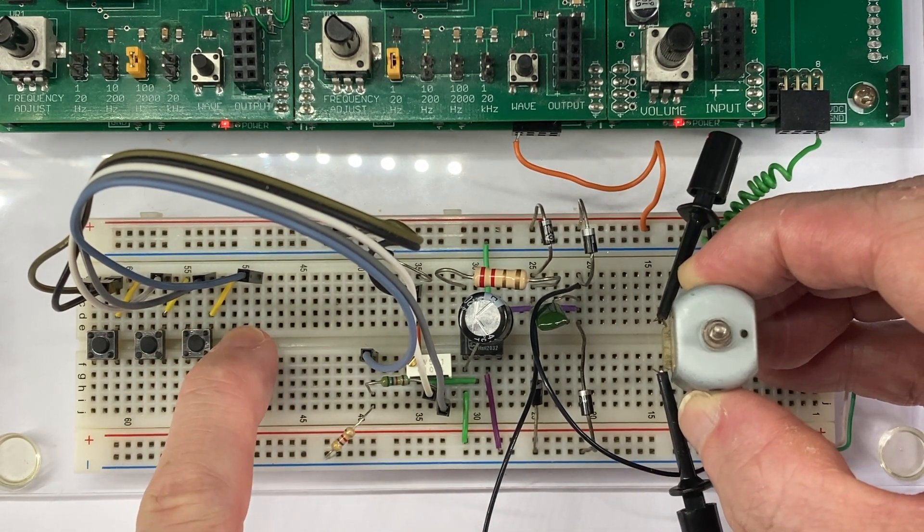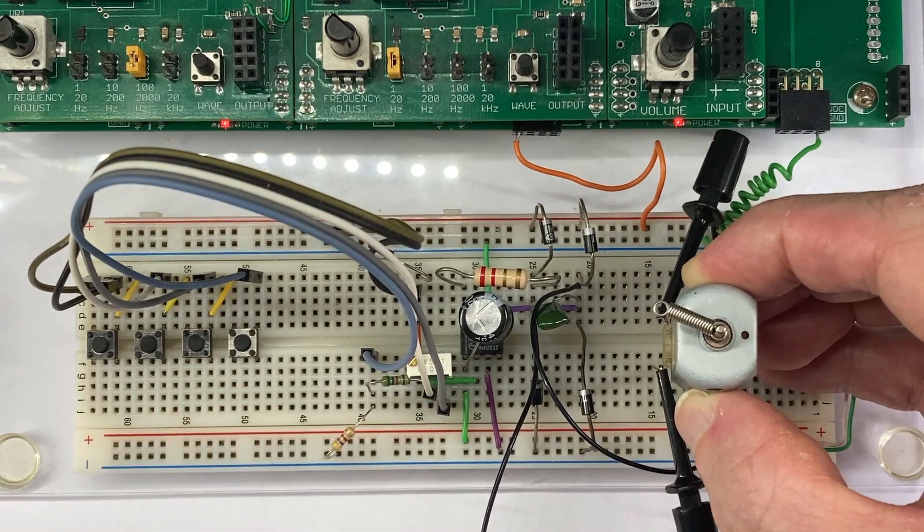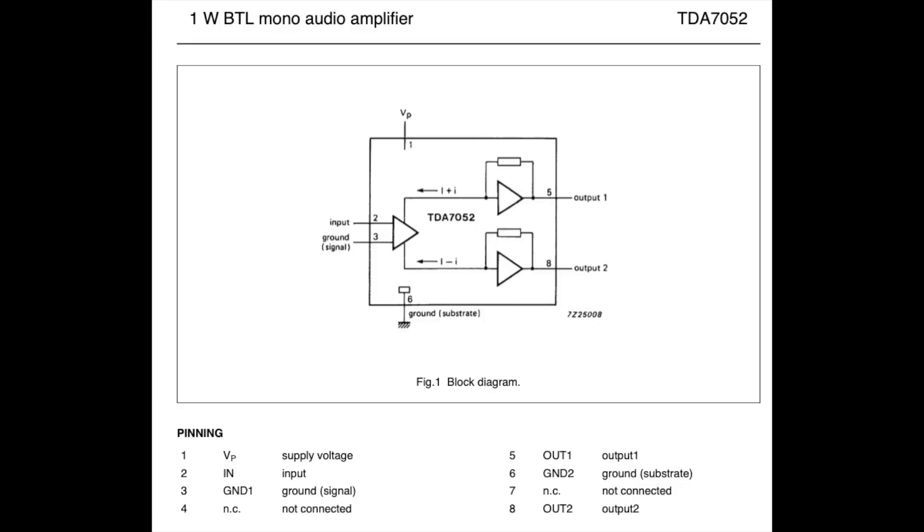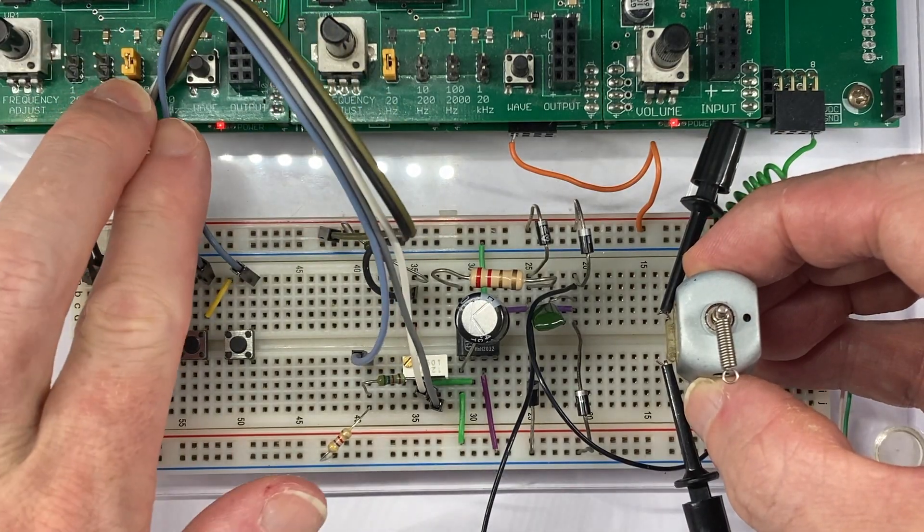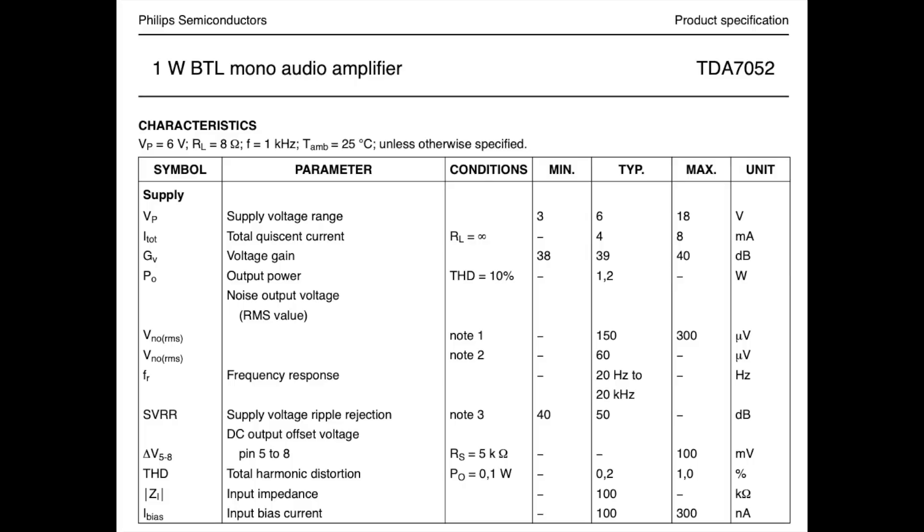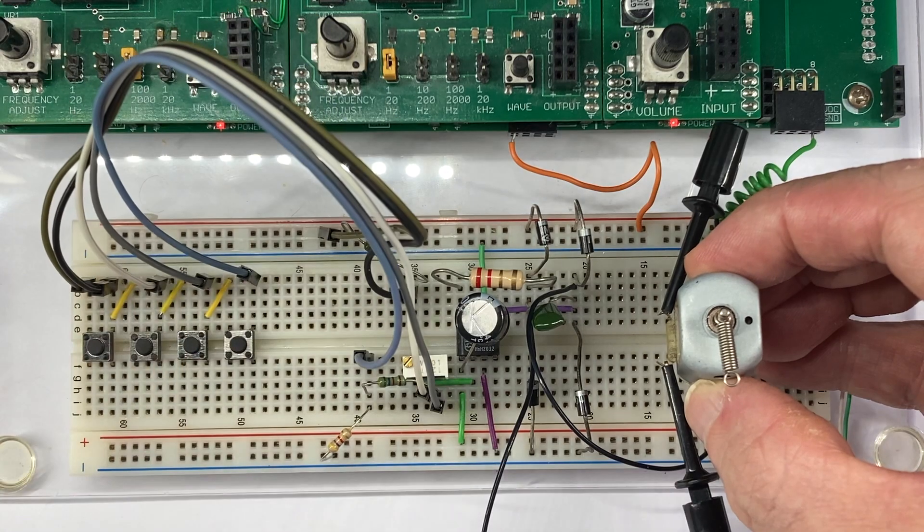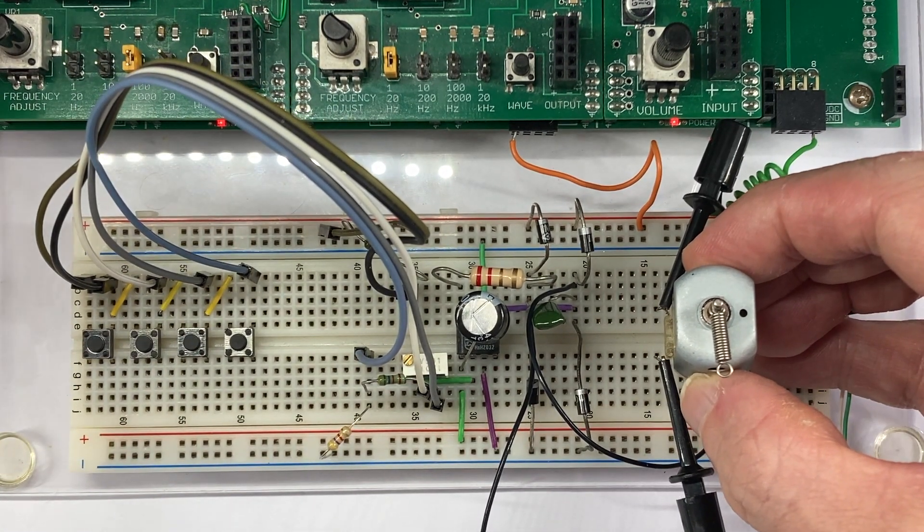Rummaging through my junk box, I found an old TDA7052 chip, which is a speaker amplifier chip. I wondered to myself, could it be done? Could I drive a DC motor with an audio amplifier chip? Could its bandwidth actually extend all the way down to DC? Looking at the data sheet, it suggests that it wouldn't. It shows a frequency response of 20 hertz all the way up to 20 kilohertz. But I thought, why not try? And so I did.